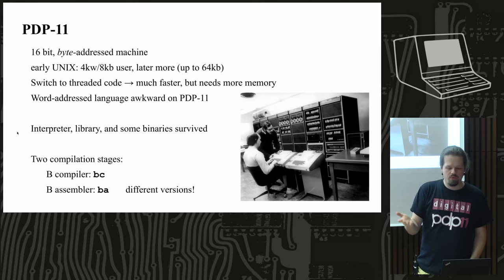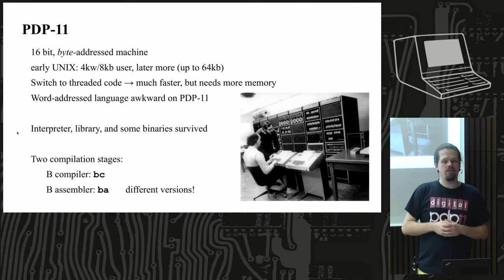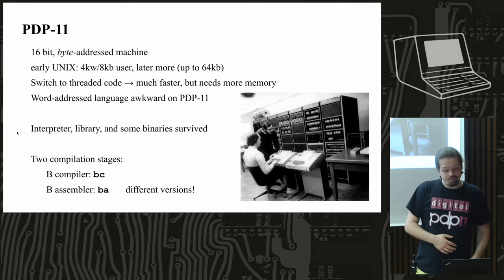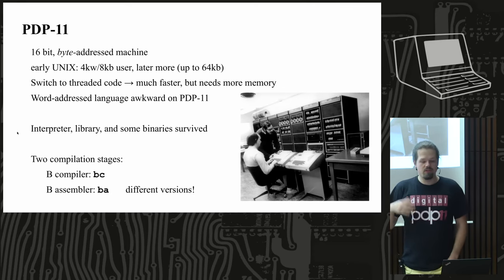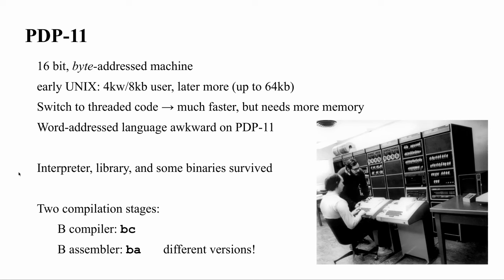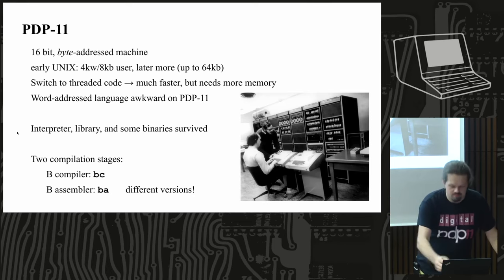At this point, B compilation happens in two stages. The B compiler 'bc' turns B source code into an intermediate code similar to what we know from the PDP-7 version, though not identical — it's not quite clear what this intermediate code looked like exactly. Then the second phase, the B assembler, turns this into something you can give to the actual PDP-11 Unix assembler. Interestingly there are different versions: one to generate threaded code, one for interpreted code, and one for a virtual B code — the virtual version was done by Ken because the compiler barely fit into 4K.